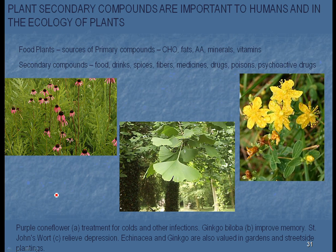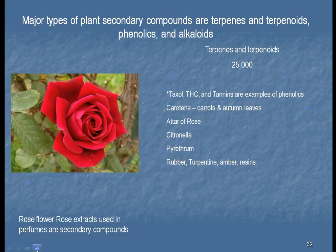Ginkgo may help us with blood clotting and may stop heart attacks. The last one — the yellow-flowered one — is St. John's Wort. We use that as a landscape plant around here. However, in Europe, they use extracts of that to treat depression; it's the primary way to treat depression over in Europe. Other ones are divided into terpenes, terpenoids, phenolics, and alkaloids. These secondary compounds help us deal with life. Here's a picture of a rose — this rose can be put into perfumes. Later on, I'm going to show you how to take the essence out of that rose so you can make rose water.